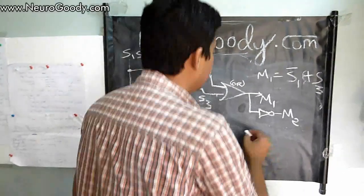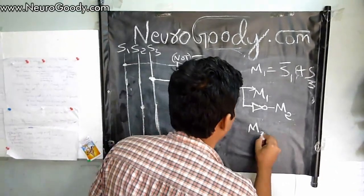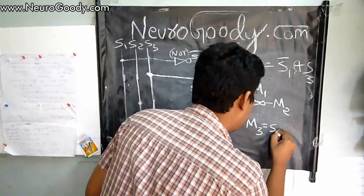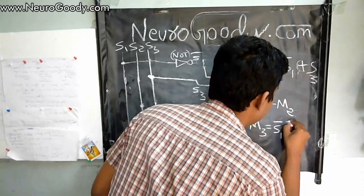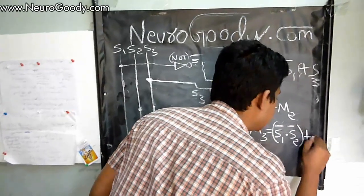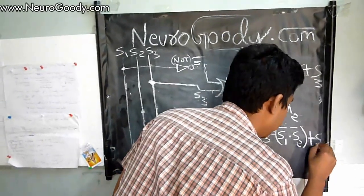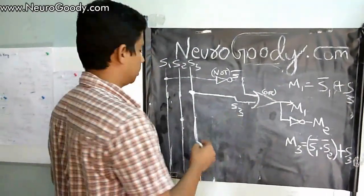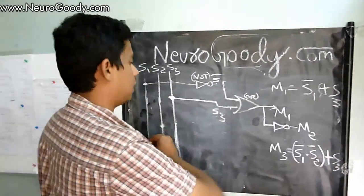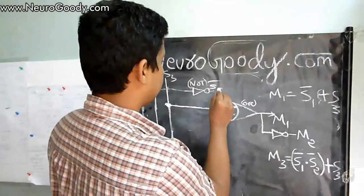Coming to the second motor, we have the equation of M3 as S1 bar into S2 bar plus S3, that is S1 bar AND S2 bar OR S3. Let's write the circuit realization for that equation.